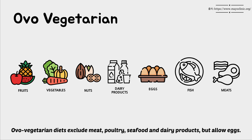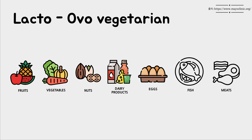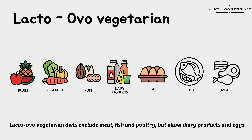Ovo-vegetarian diets exclude meat, poultry, seafood, and dairy products, but allow eggs. Lacto-ovo-vegetarian diets exclude meat, fish, and poultry, but allow dairy products and eggs.